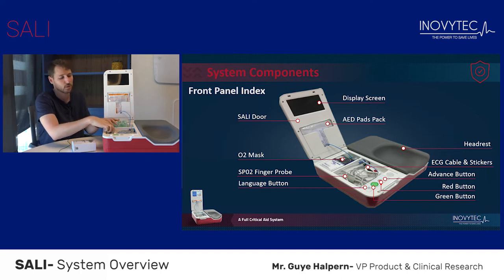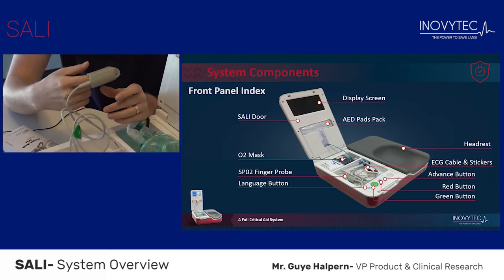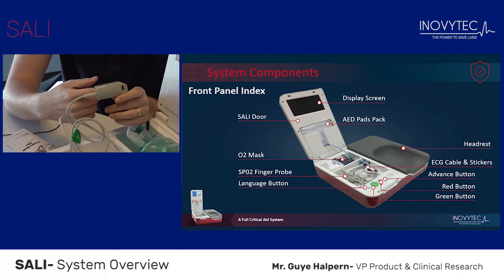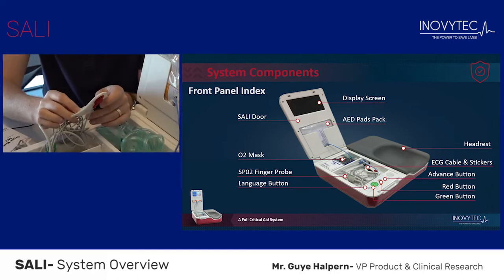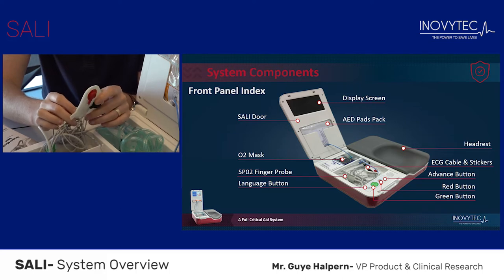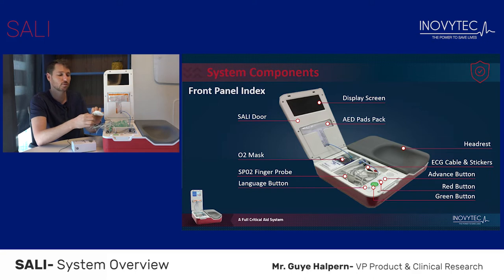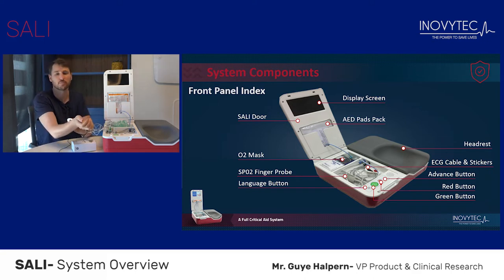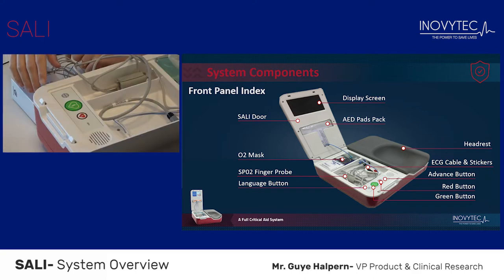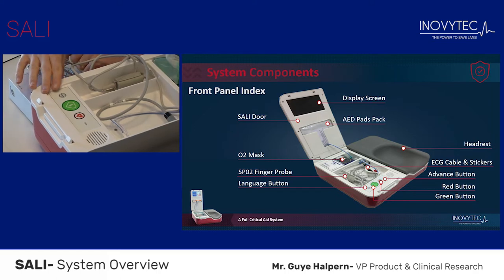Next, we have the SpO2 finger probe, which will monitor the patient's saturation levels. Here we have the ECG stickers — they will help you monitor the patient's ECG without having to undress the patient, by simply attaching both stickers to the wrists of the patient. At the bottom part of the device, you will find the SALI keypad.